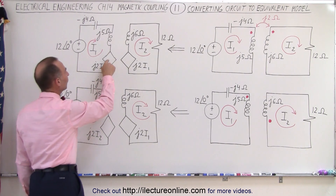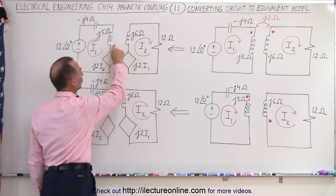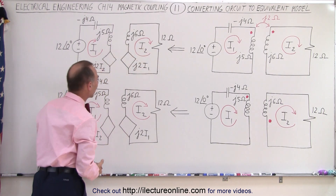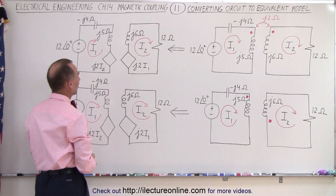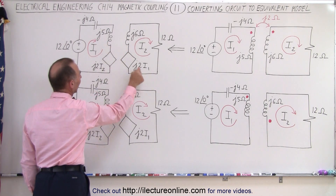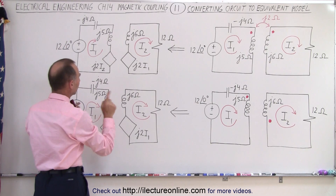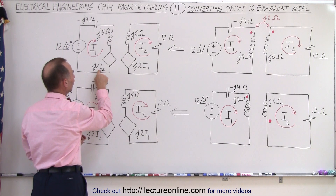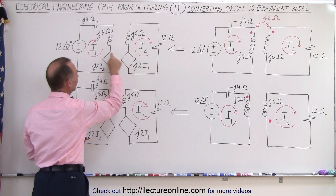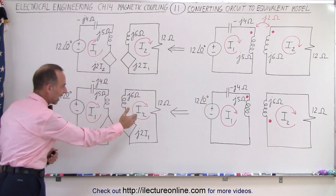We have the voltage induced in this circuit because of what happens with the mutual coupling and what happens with the current in the other circuit. And we do the same over here — the voltage induced because of the mutual inductance and the current in the other circuit. The only difference here is that this is affected by the current in this circuit, and this here is affected by the current in this circuit, and notice it's exactly the same.